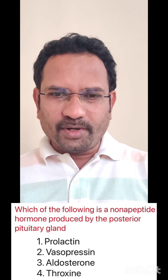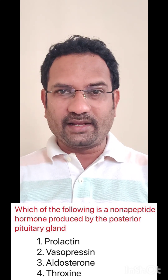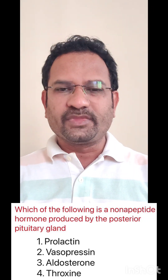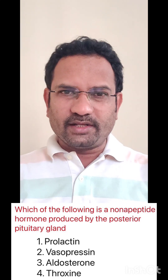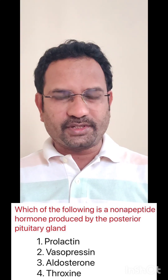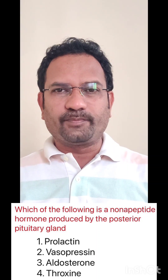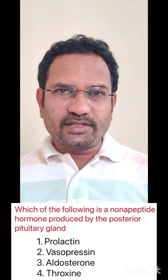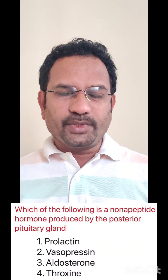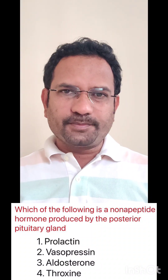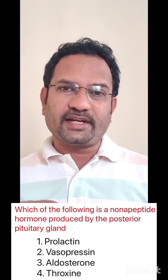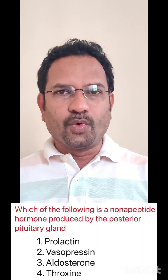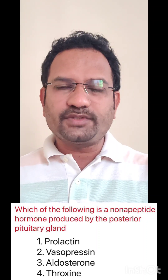Which of the following is a nonapeptide hormone produced by the posterior pituitary gland? Options given are: 1 prolactin, 2 vasopressin, 3 aldosterone, 4 thyroxine. The posterior pituitary gland releases two hormones: oxytocin and vasopressin. Vasopressin is also known as antidiuretic hormone. Diuresis means increase in urinary output; vasopressin is antidiuretic because it increases aquaporins, a channel which reabsorbs water into the body. When water is reabsorbed, diuresis is reduced. It is a peptide hormone made up of 9 amino acids, hence it is known as a nonapeptide. The answer is option 2, vasopressin.